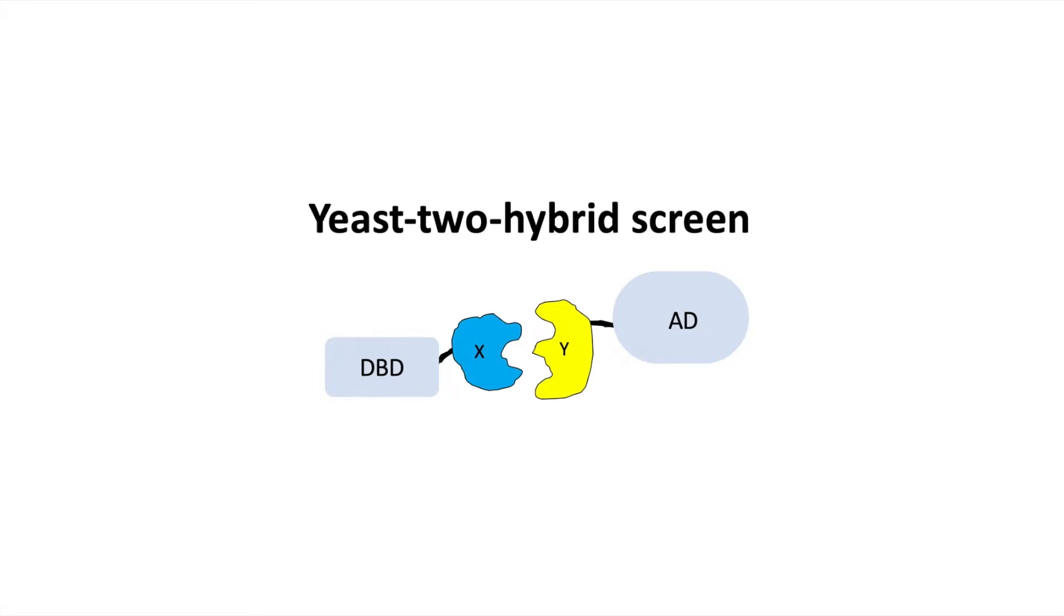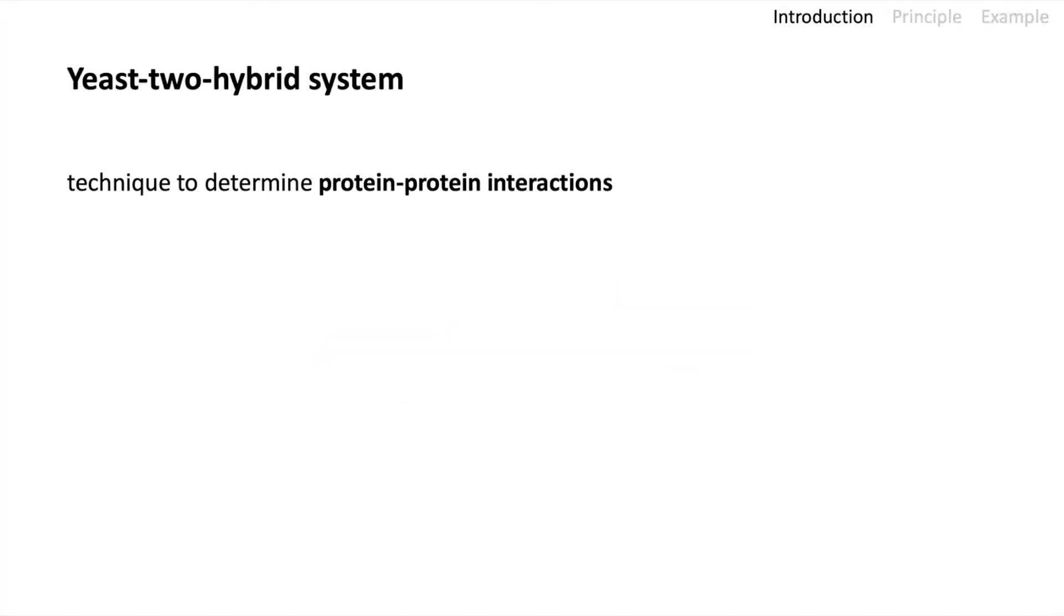Hello and welcome to today's talk about the yeast-two-hybrid screen or also called yeast-two-hybrid system. The yeast-two-hybrid system is a technique to determine protein-protein interactions. To show the interactions of the proteins we use reporter genes.